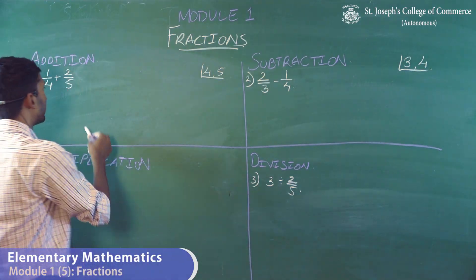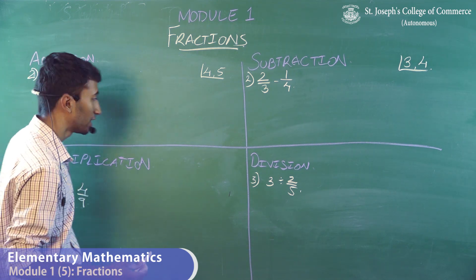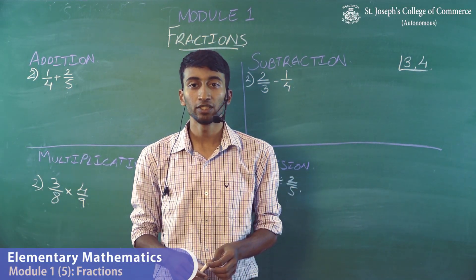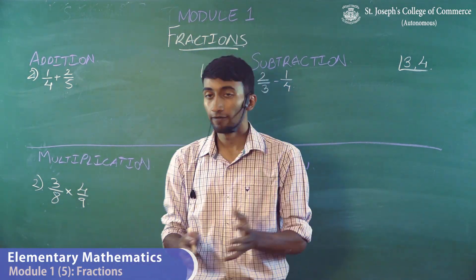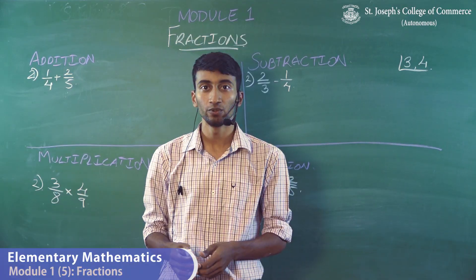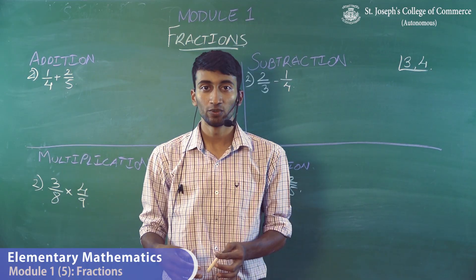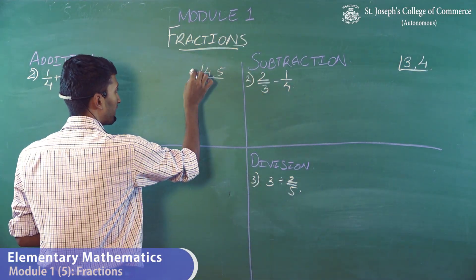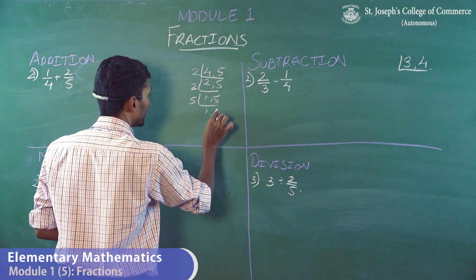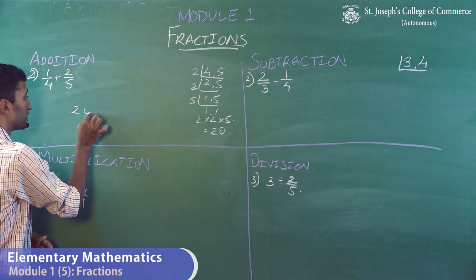When it comes to addition of fractions, I'm taking the second sum under addition, that is 1 by 4 plus 2 by 5. As you can notice, the denominators are not the same. You cannot add a pizza which is 4 parts and a pizza which is 5 parts. Their sizes will be different. So you have to take the LCM of these two numbers so that you get the denominator equal and then solve it. So you take the LCM of 4 and 5. 2 twos are 4, 2 fives are, 2 ones are, and 5 ones are. So 2 into 2 into 5 will give you 20. So 20 is your LCM.